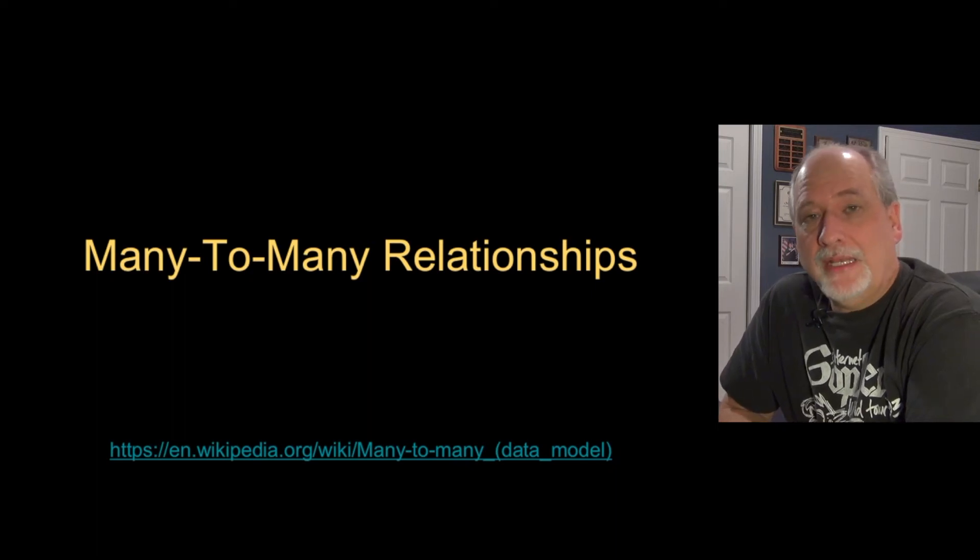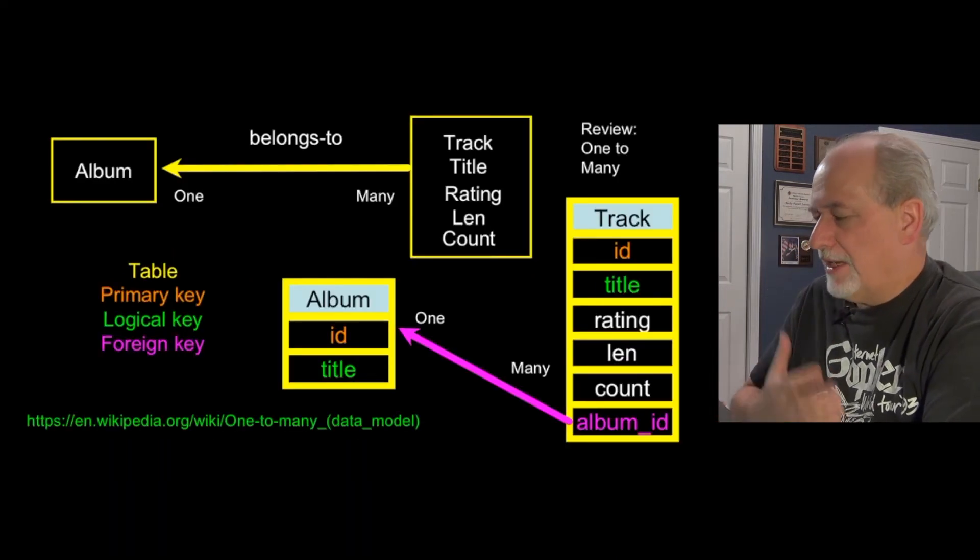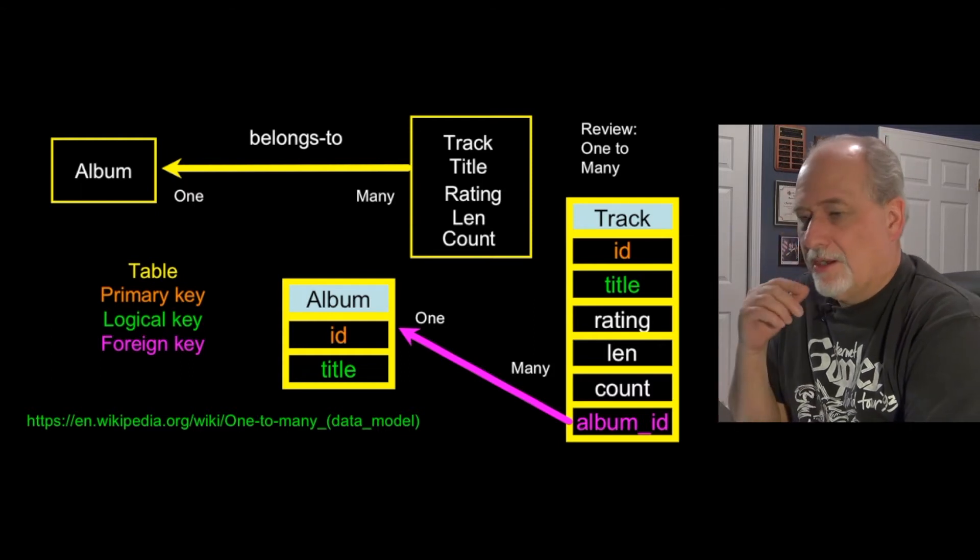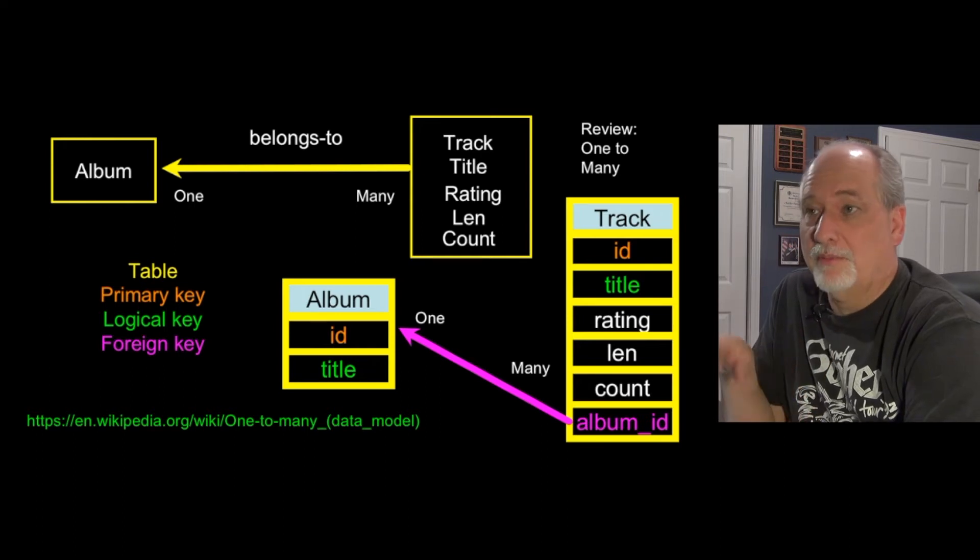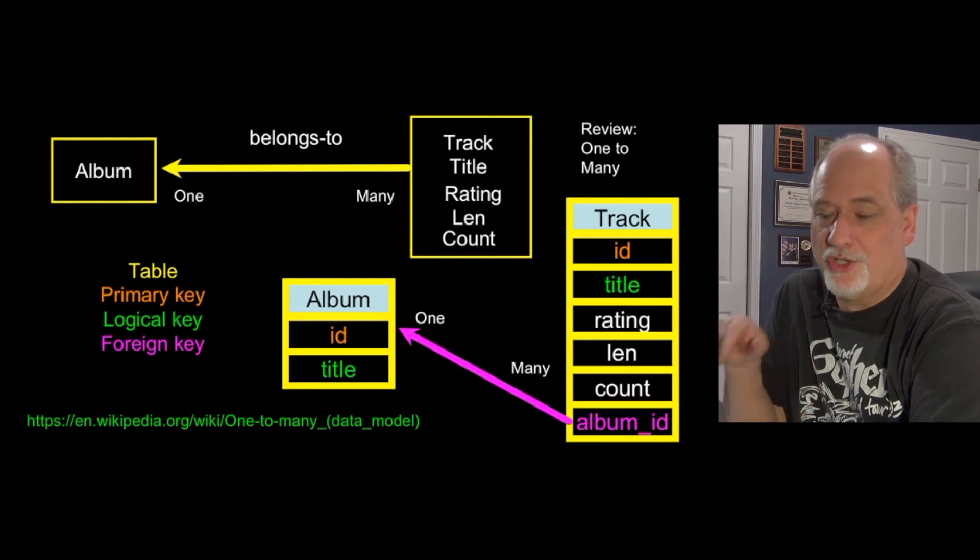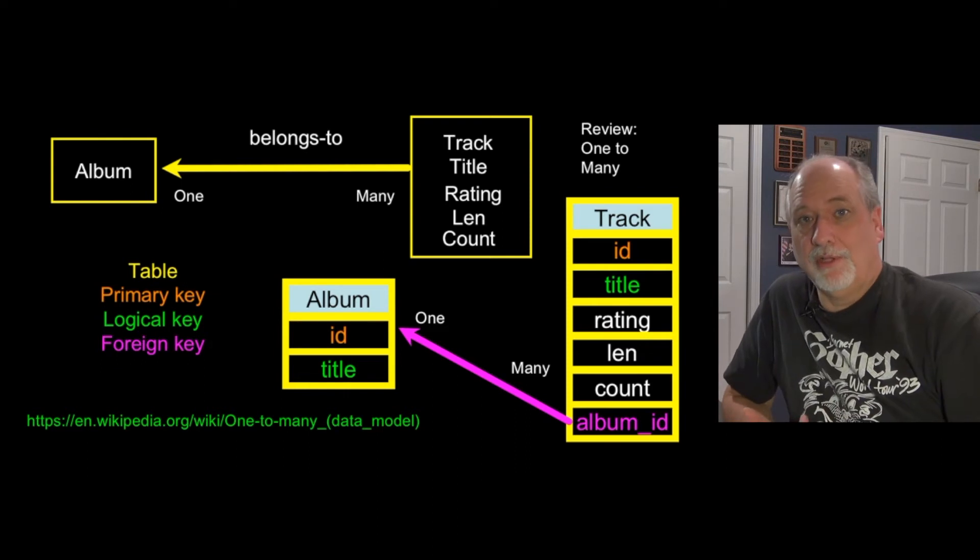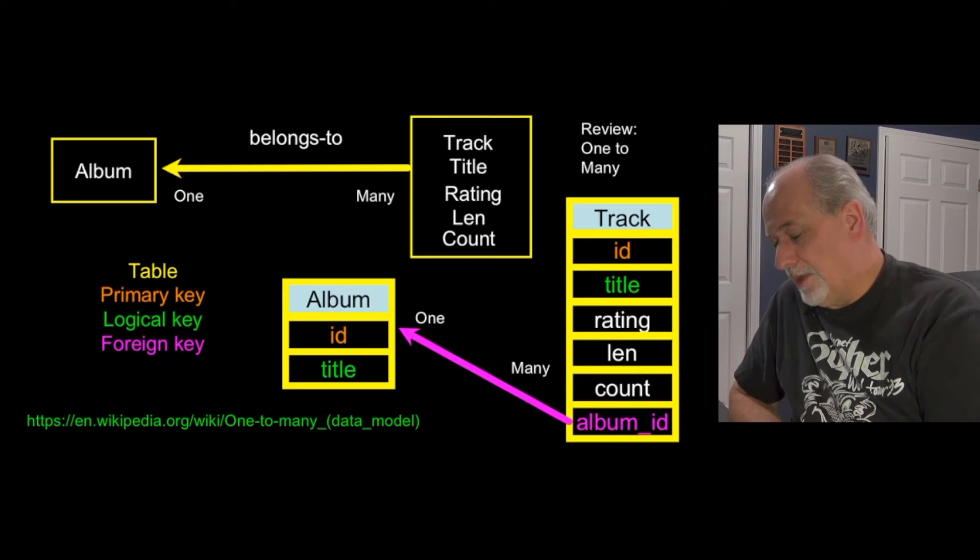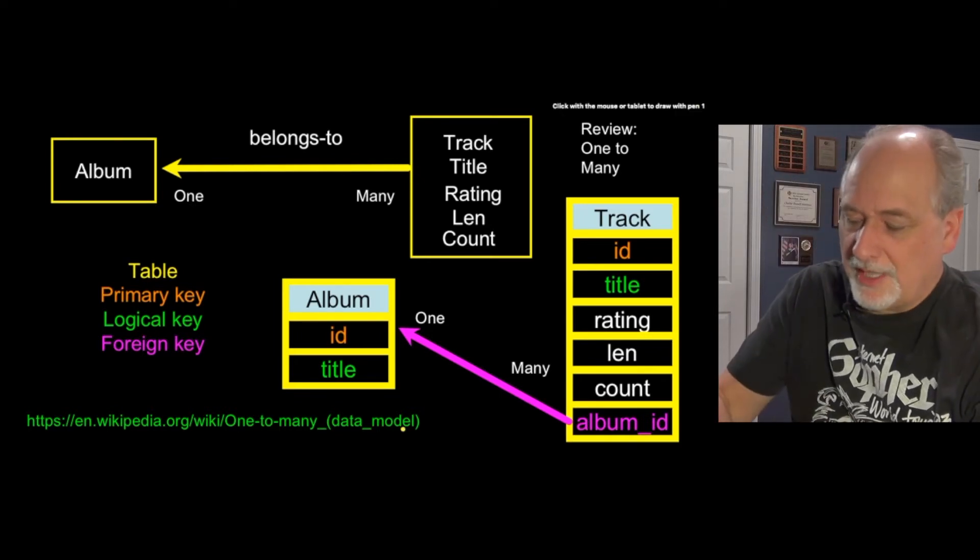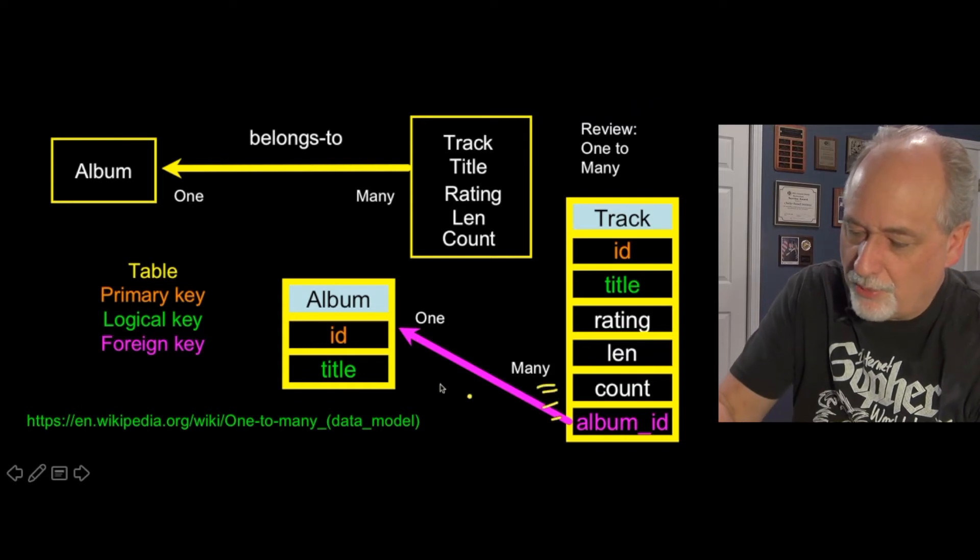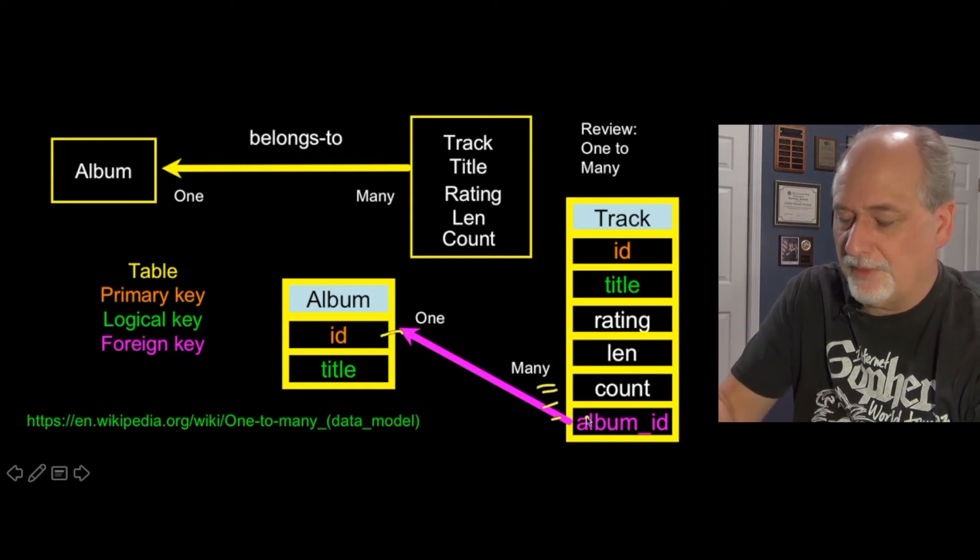Our last major topic is called many-to-many relationships. Up to now everything we've done is a one-to-many relationship - there are many tracks associated with one album, many albums associated with one artist, many tracks associated with one genre. You can think of labeling the arrows to show which end is the many and which end is the one. The foreign key is pointing to many rows over here that point to one row over here, so it's a many-to-one relationship.